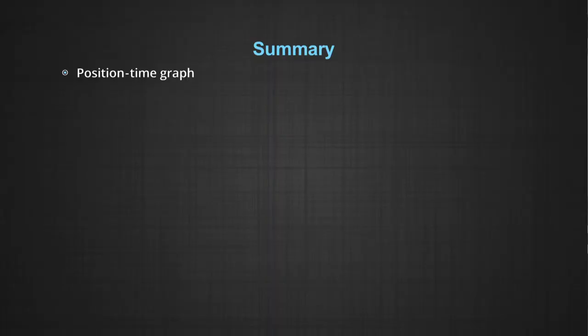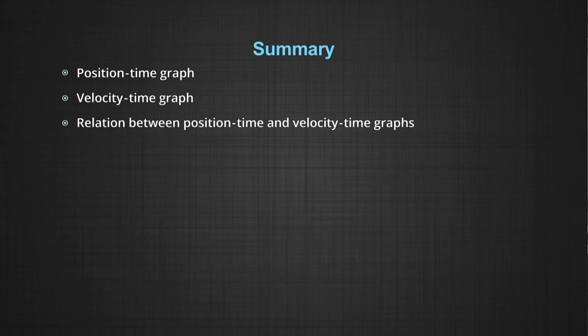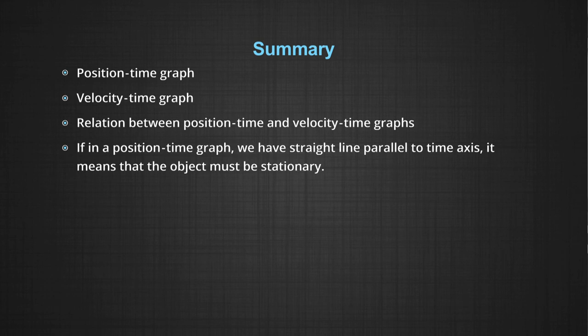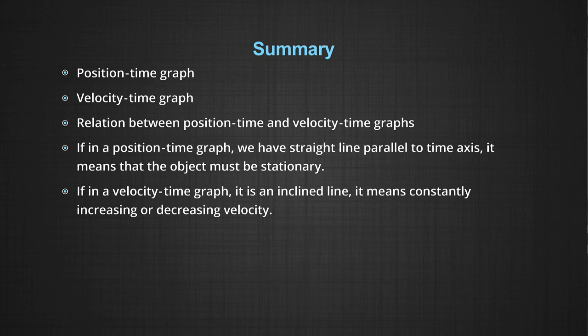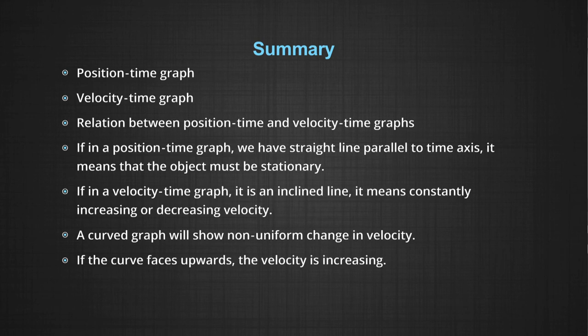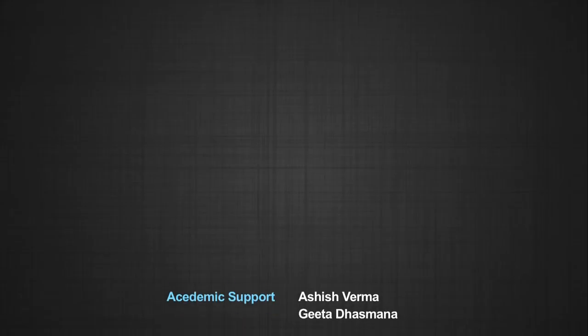In summary, you have learned the meaning of position time and velocity time graphs and the relationship between them. A straight line parallel to the time axis means the object is stationary. An inclined straight line means constant velocity. A curved graph shows non-uniform change in velocity — if the curve faces upward, velocity is increasing. You can use the position time graph to construct a velocity time graph for calculation or to describe the motion of objects.